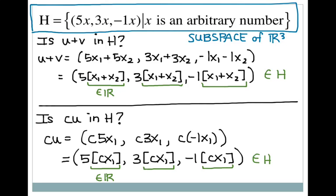That was our last example. As you've noticed, we do the same three steps each time: check whether the zero vector is in the set; given two arbitrary vectors, check whether their sum is in the set; and take a scalar times a vector and check whether that's in the set. If one of those fails, it's not a subspace. If all three hold, it is a subspace.